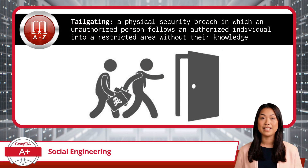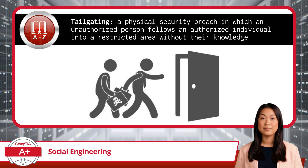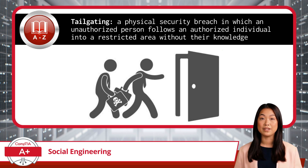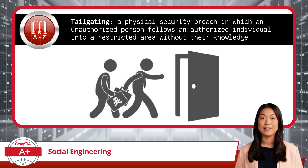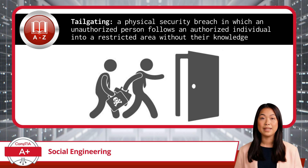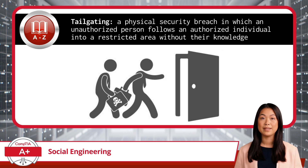Next up, we have tailgating. This is a physical security breach in which an unauthorized person follows an authorized individual into a restricted area without their knowledge. The attacker exploits the moment when someone with legitimate access opens a secure door, gate, or entrance. They slip in right behind, blending in, and bypassing the need for any credentials like a keycard or passcode. The sneaky attacker gains access without needing to break through security systems — they're simply walking through the door after someone else.